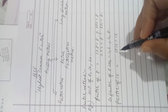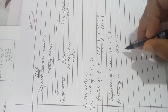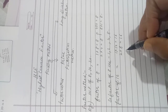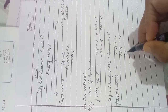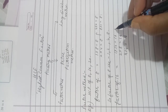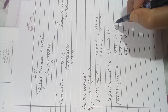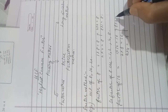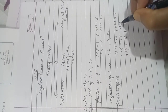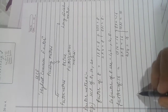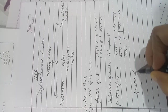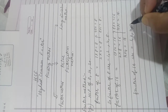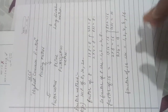Now we will find the factors of 16. In the table of 2, 2 × 8 = 16. In the table of 4, 4 × 4 = 16. And 8 × 2 = 16, and 16 × 1 = 16. So the factors of 16 are 1, 2, 4, 8, and 16.